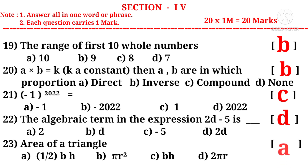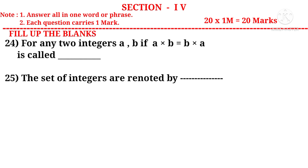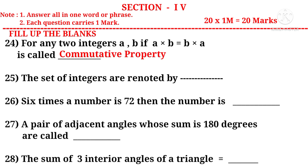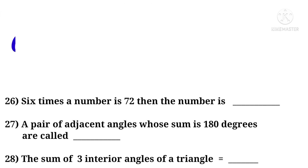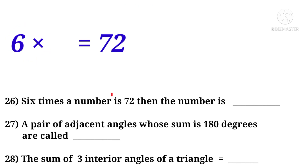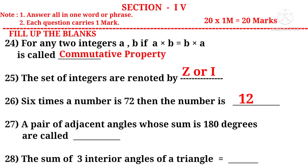Question 23: Area of a triangle equals half into B into H. Correct choice is A. Now fill in the blanks. Question 24: For any two integers A, B, if A into B equals B into A, it is called commutative property under multiplication. Question 25: The set of integers is denoted by Z. Question 26: 6 times a number is 72 — 6 into the number equals 72, so the number is 12.